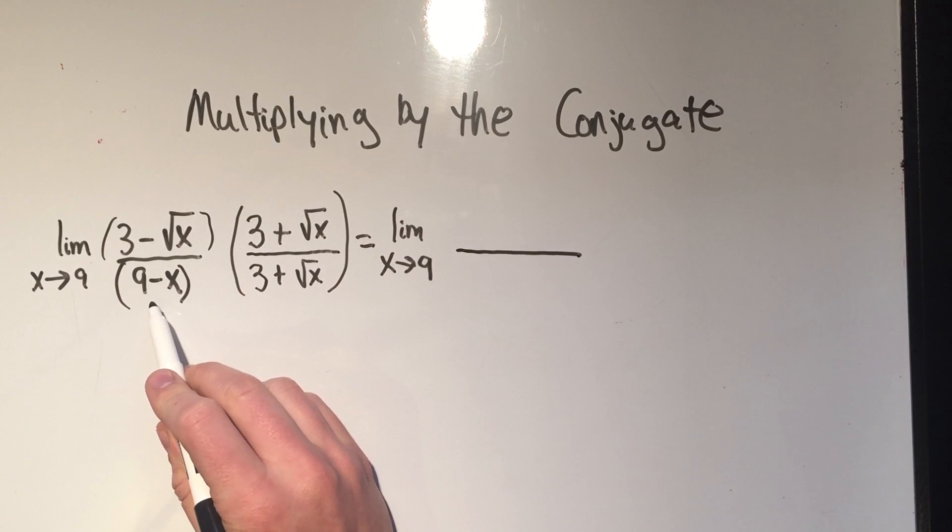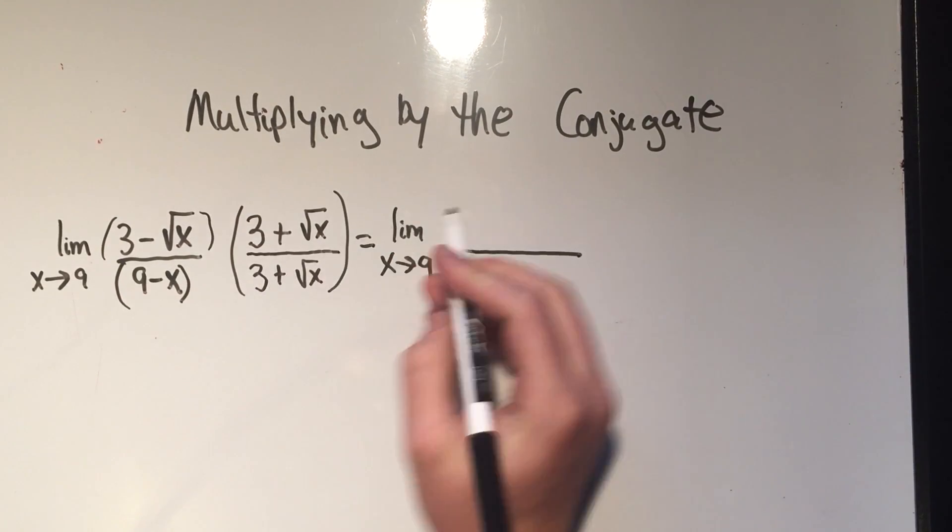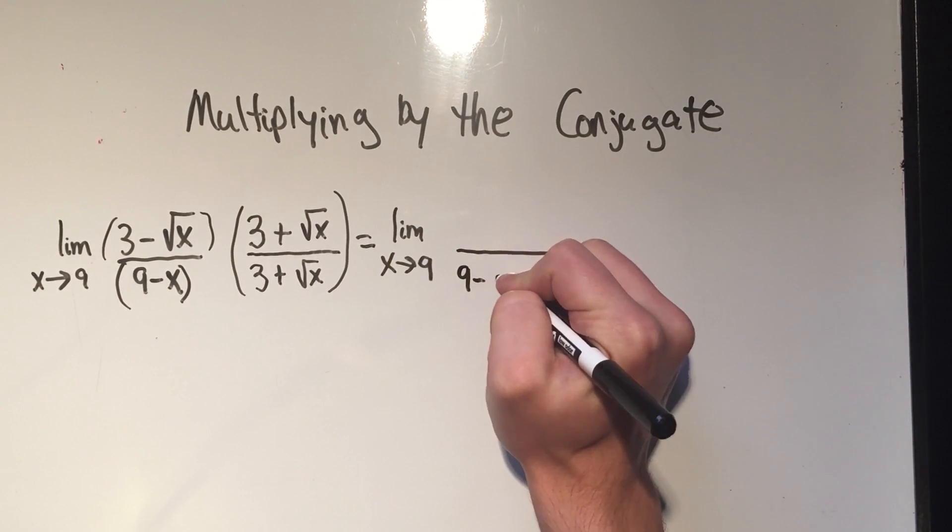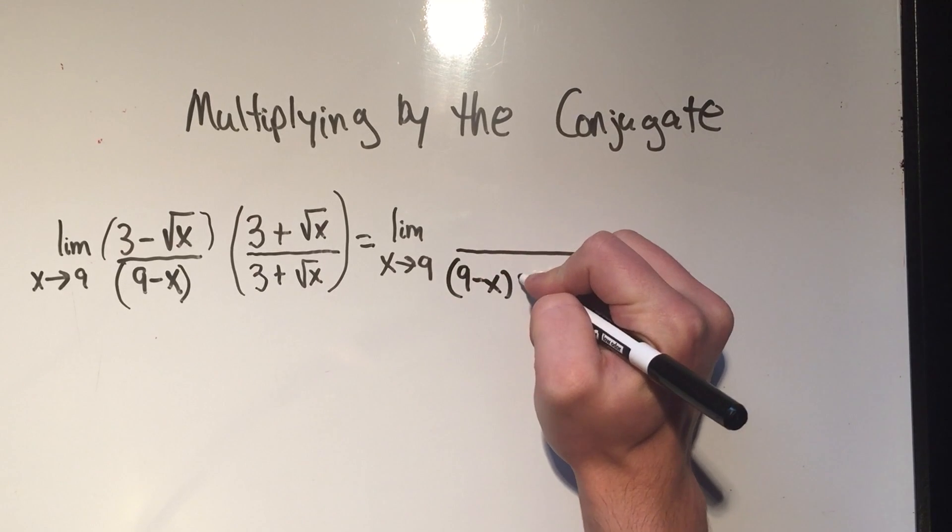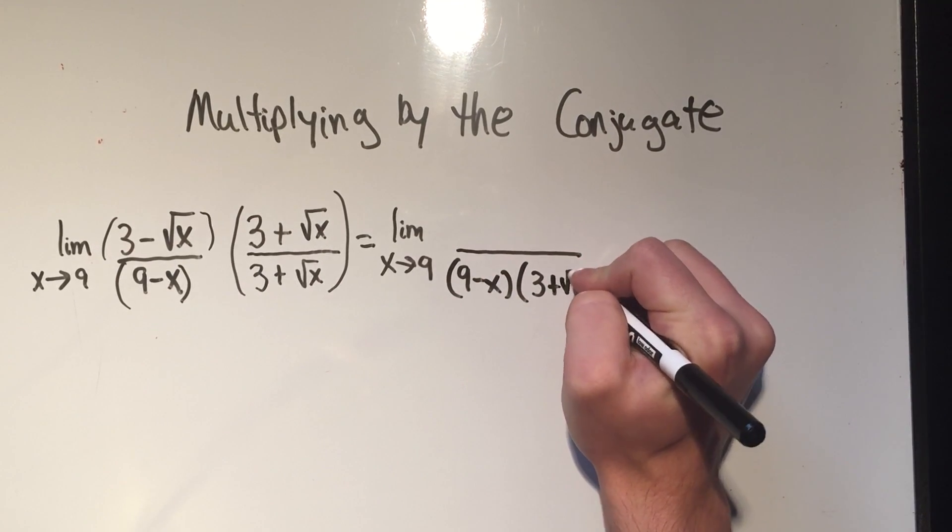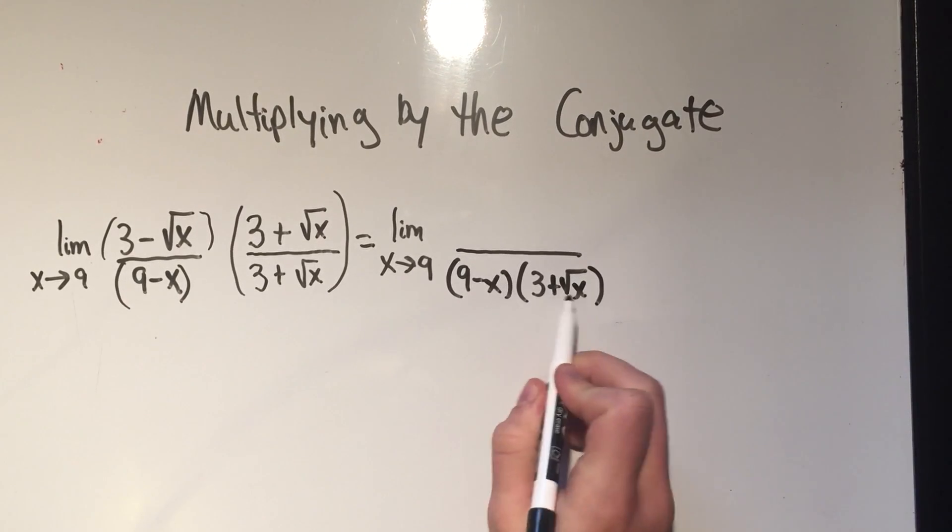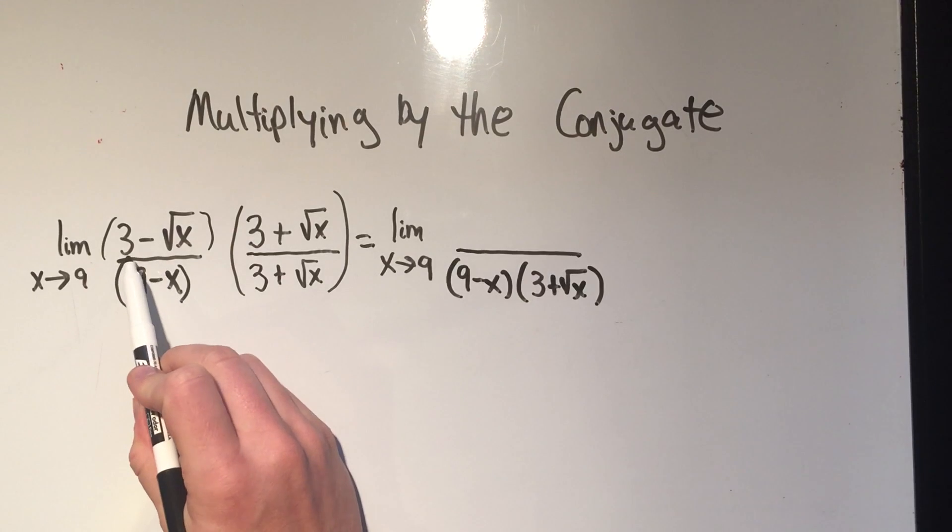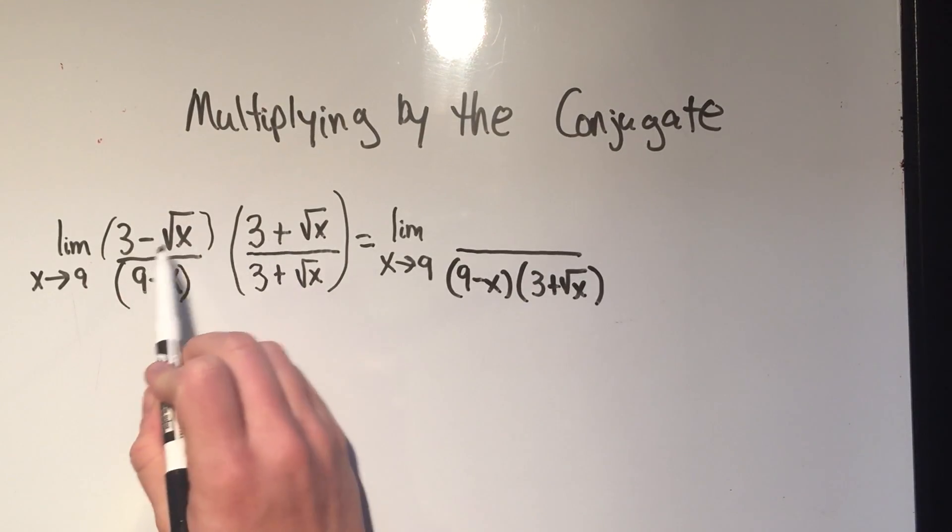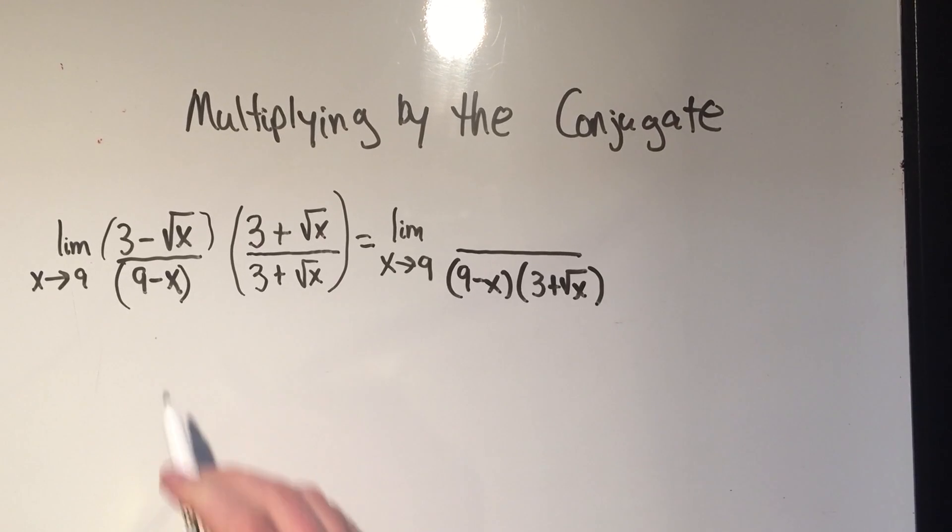On the bottom, the part that's not the conjugate, you should always just mash them together. Just write those two things next to each other and it'll save you a lot of stress. What I mean is don't distribute this. Don't foil this through. The only thing we're going to foil is the conjugate part.